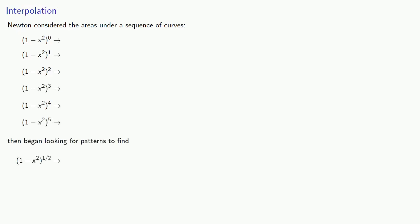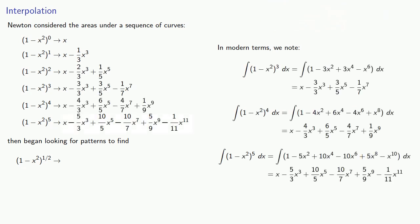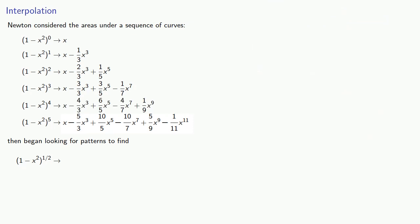Then began looking for patterns to find (1 - x²)^(1/2). So in modern terms, we might note that the area under the curve (1 - x²)^0 is... (1 - x²)^1 is... (1 - x²)^2 is... and so on. But now let's look carefully at our results. The first thing we notice is the first term in every expansion is x. And so this suggests the first term in the expansion of (1 - x²)^(1/2) should also be x.